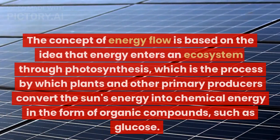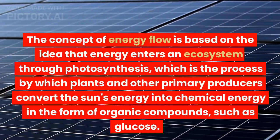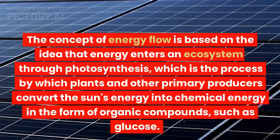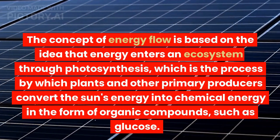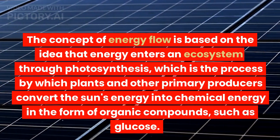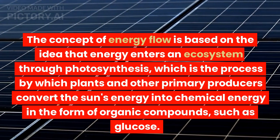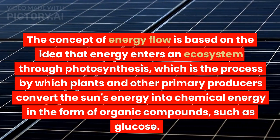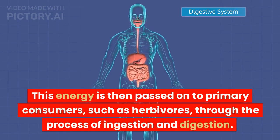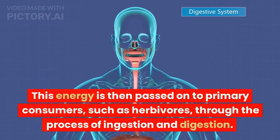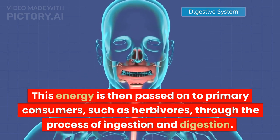The concept of energy flow is based on the idea that energy enters an ecosystem through photosynthesis, which is the process by which plants and other primary producers convert the sun's energy into chemical energy in the form of organic compounds, such as glucose. This energy is then passed on to primary consumers, such as herbivores, through the process of ingestion and digestion.